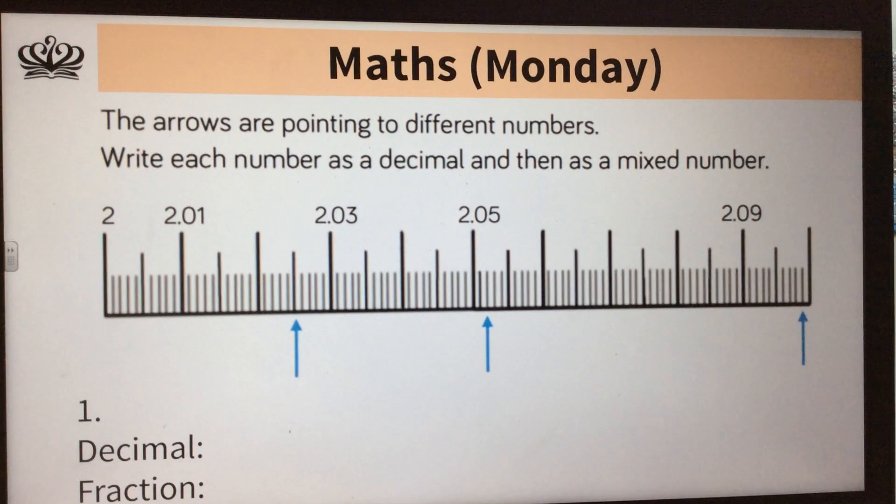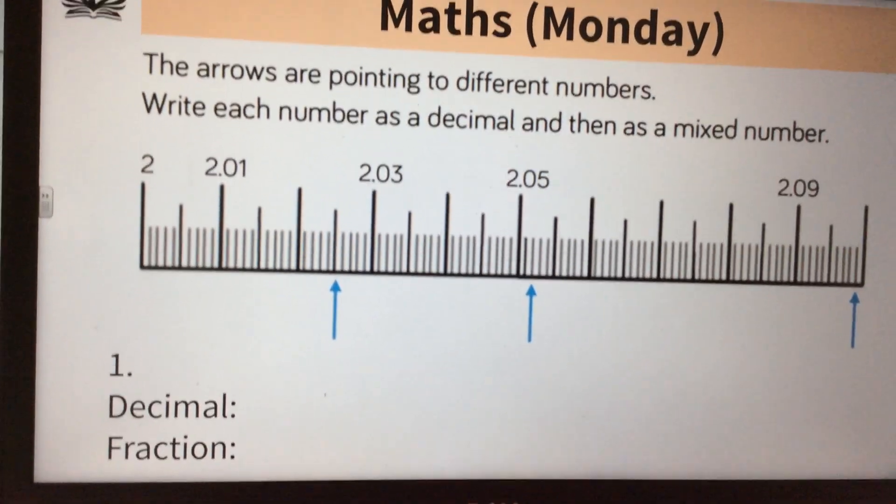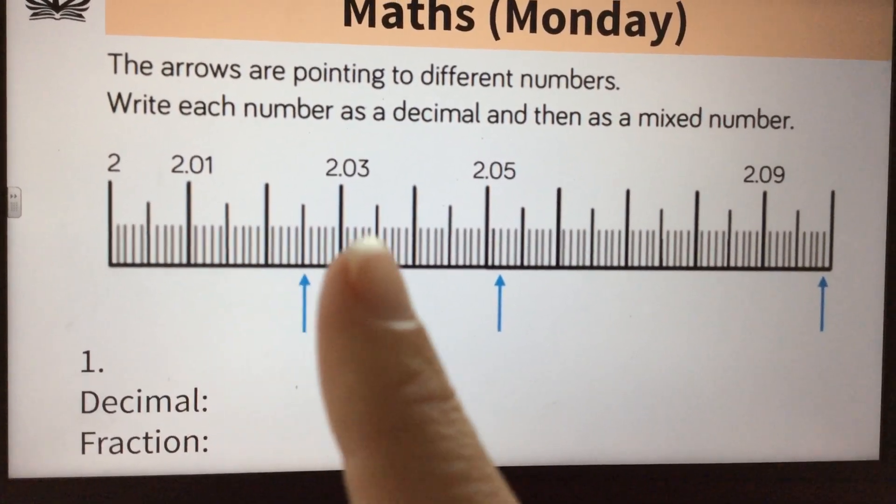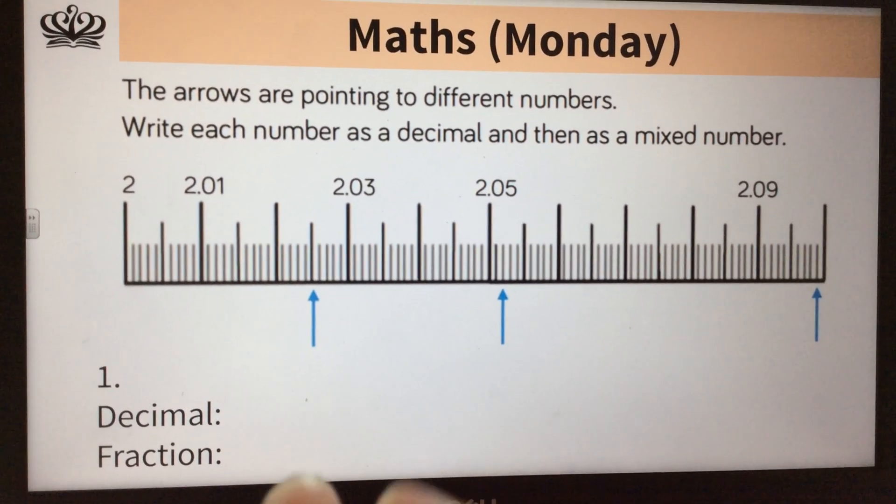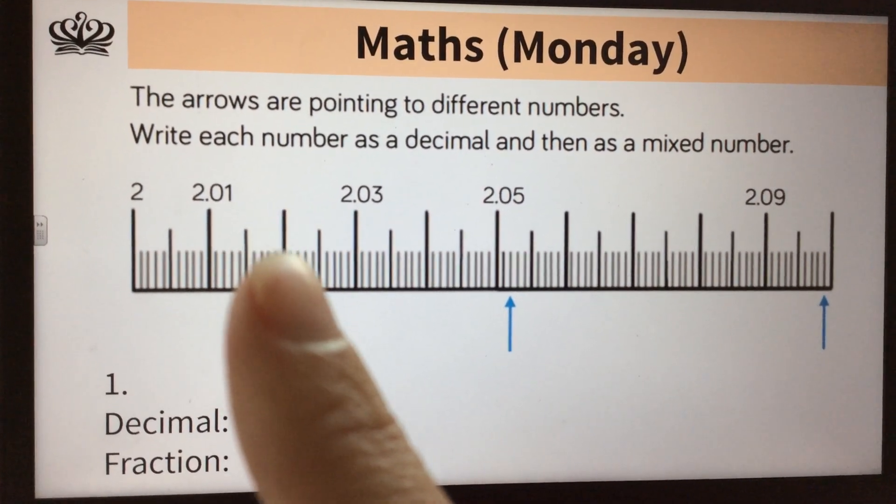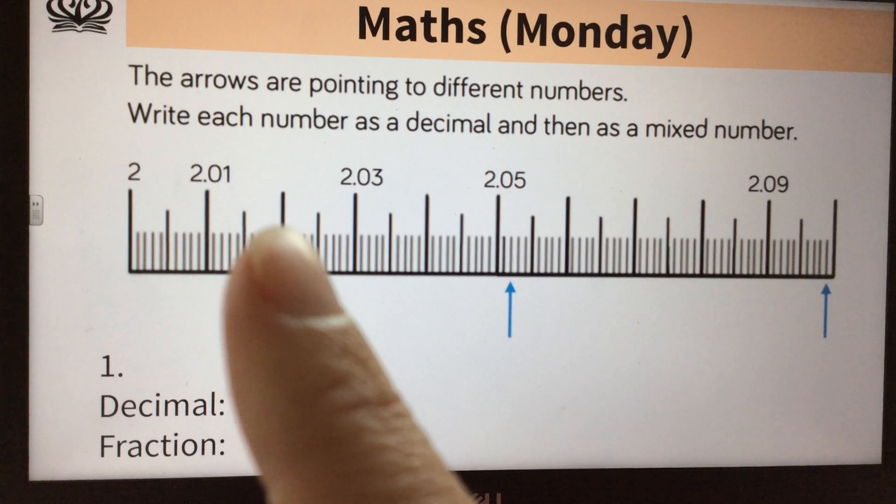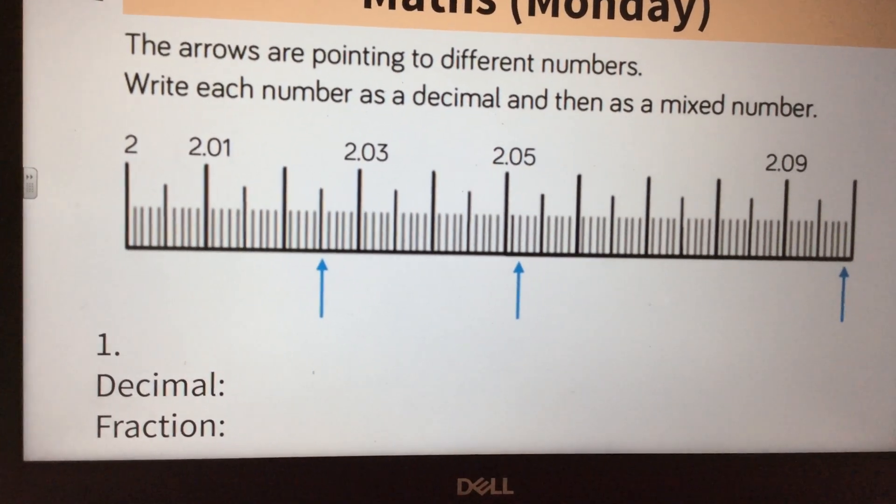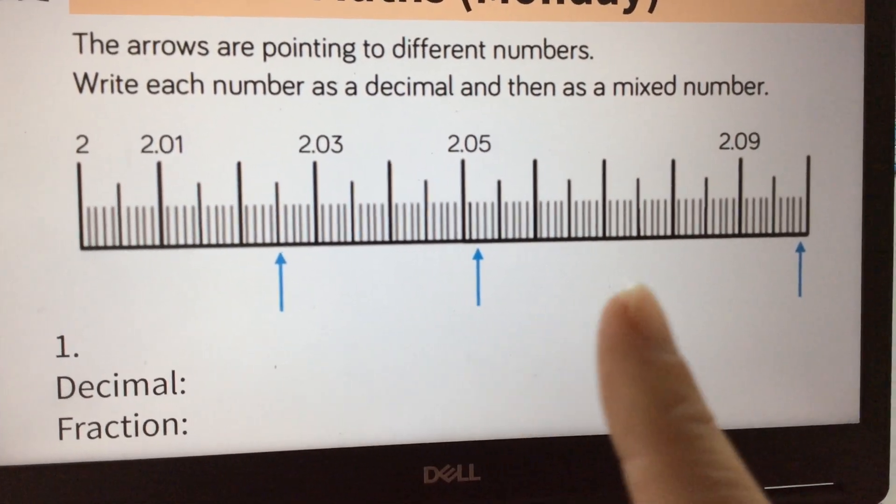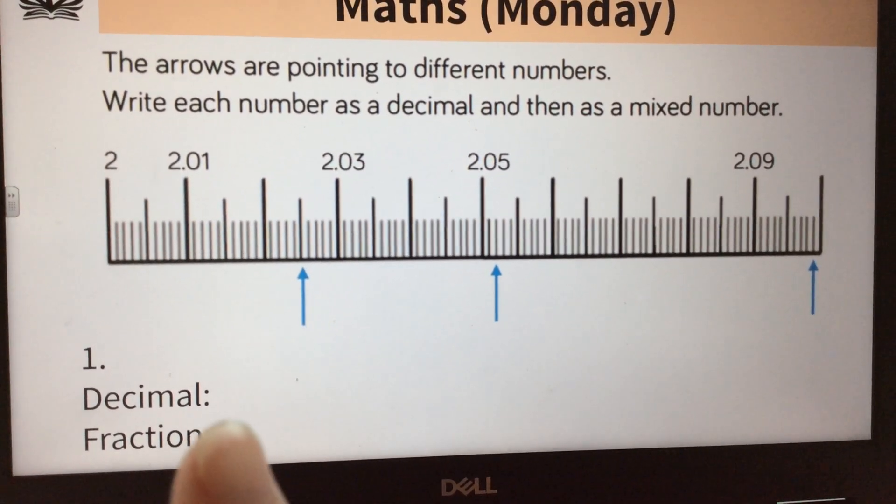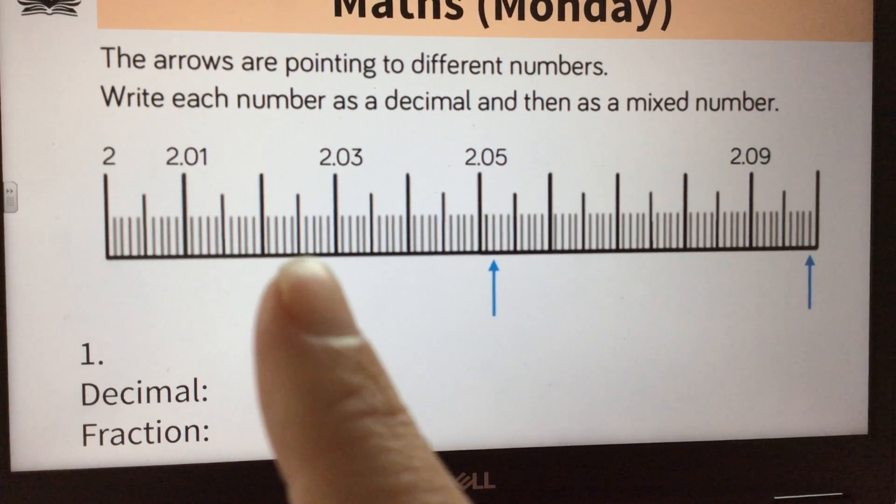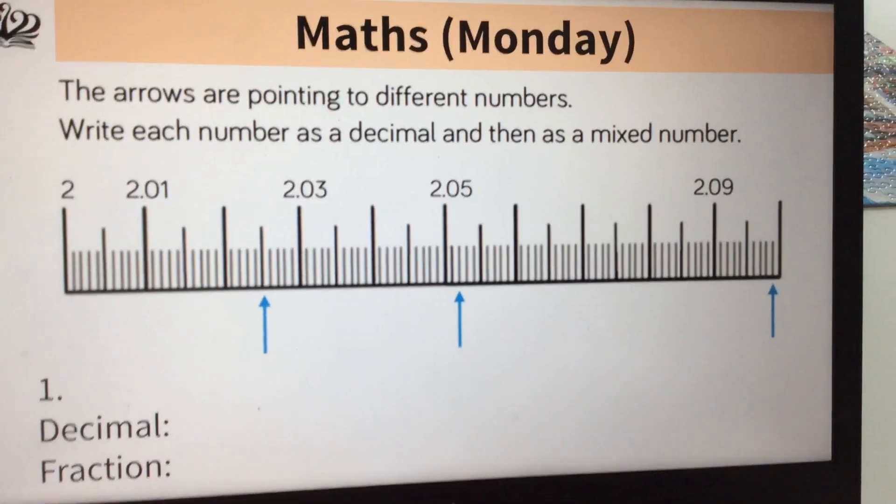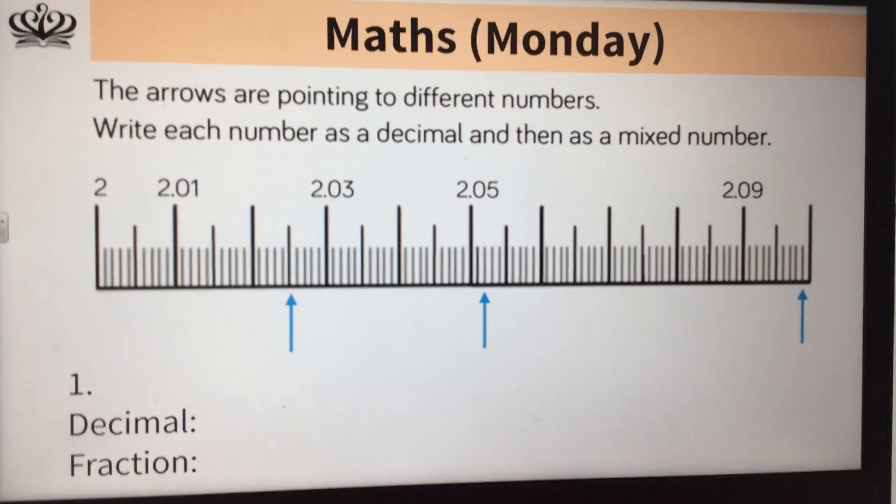This next one's a bit tricky. So see how you get on with this one. It's tricky because you've got to work out what the intervals are worth on the number line. So if you've printed this off or if you've got this, you might want to write in what each of these longer lines are worth and work out what those values mean as well. And for each of these three blue arrows, so one, two, three, you need to write each number as a decimal and as a fraction. Remember that if you've got a number before the decimal point like that two, that is a whole number. So that's a bit tricky that one, but have a go with that one.